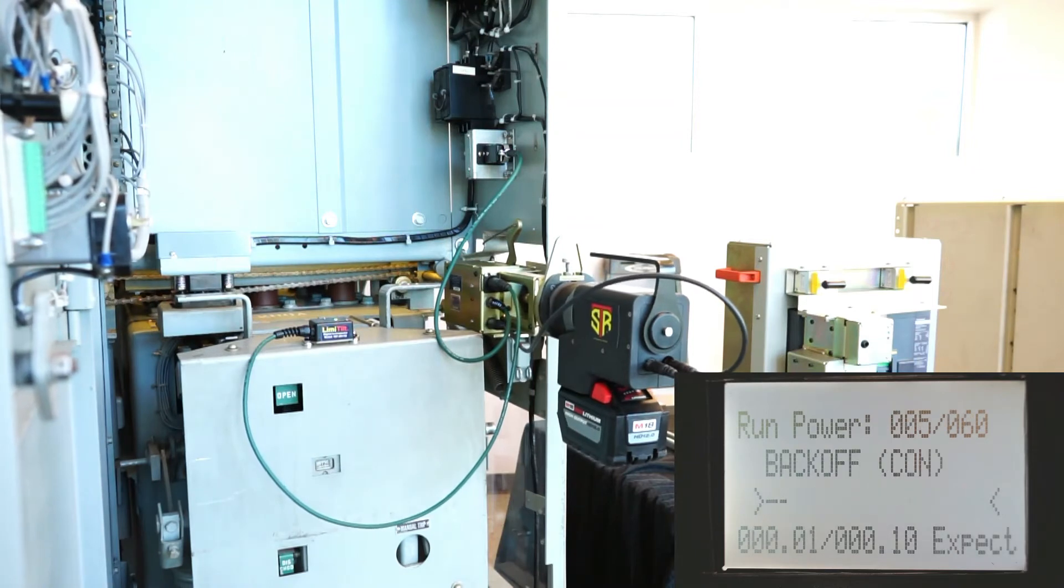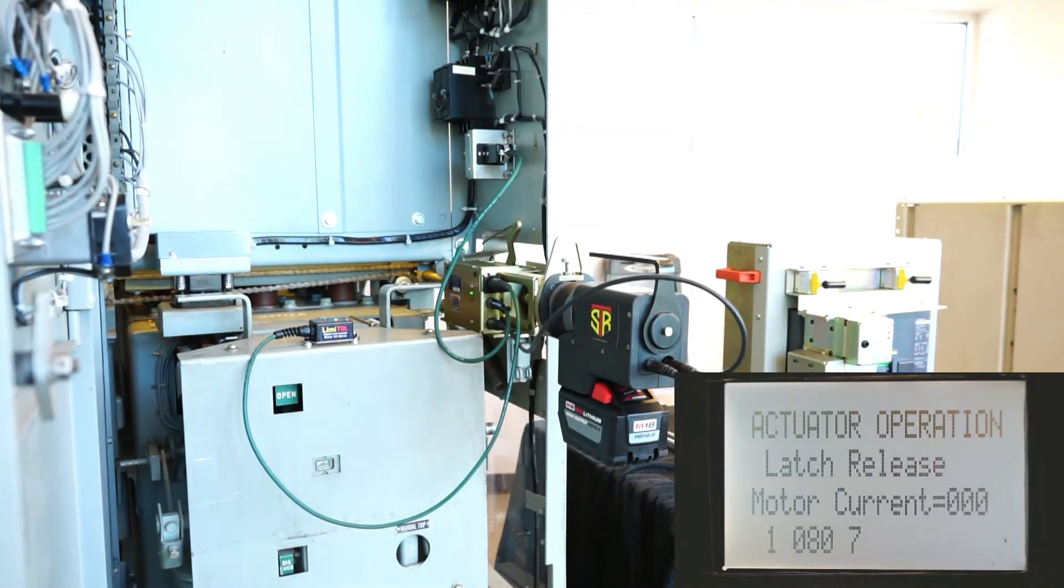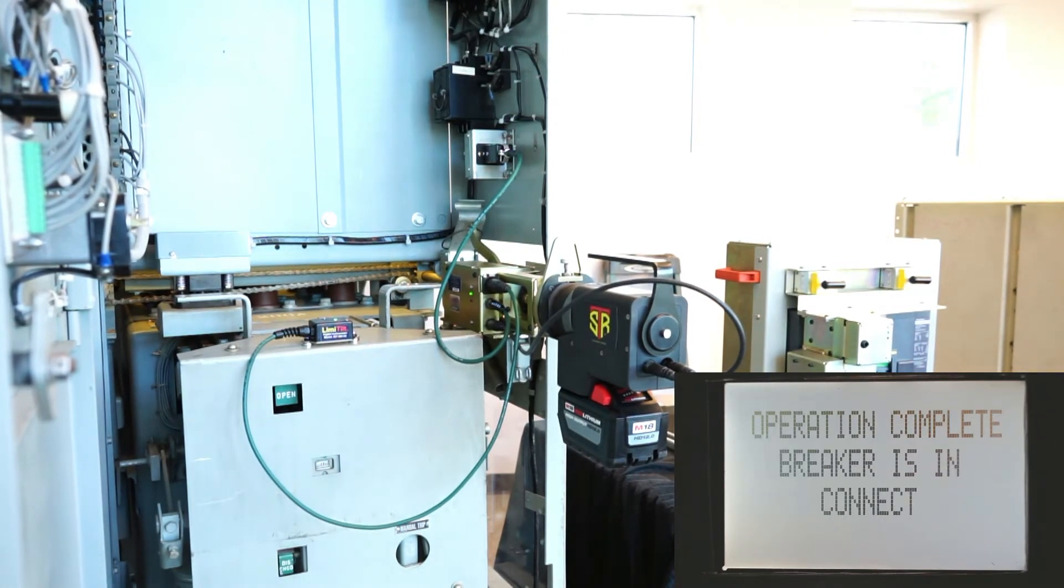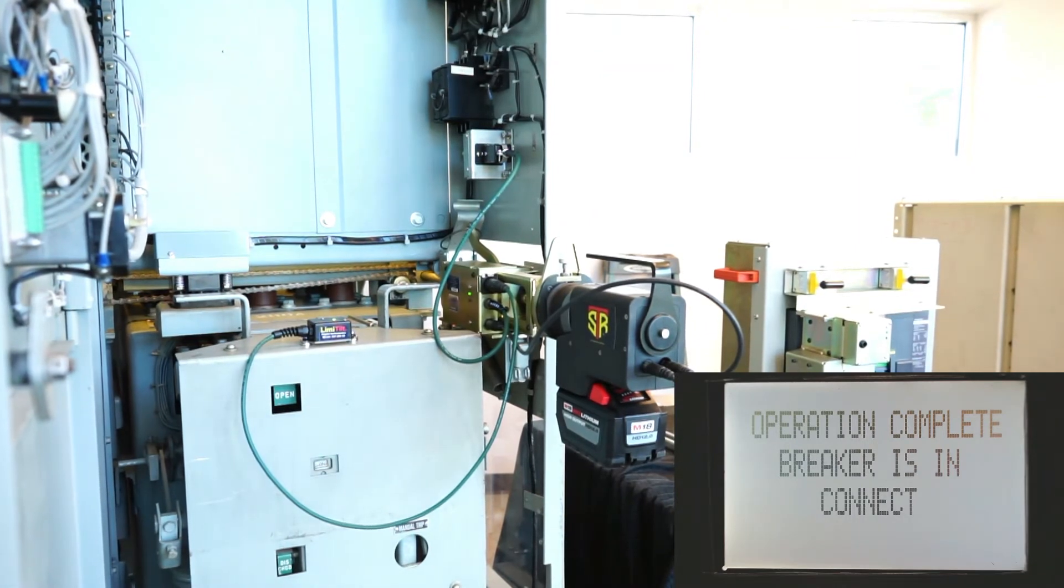So, here we go. We're going to release the clutch arm and the operation is complete and the breakers in connect, we're able to power down.